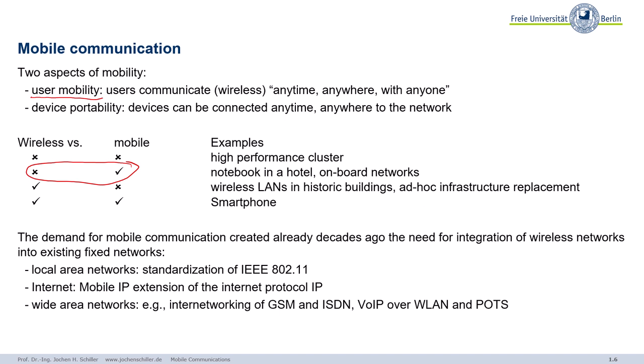We also have examples of non-mobile fixed wireless LANs — for example, in historic buildings where you cannot drill a hole through a historic wall, or ad hoc infrastructures set up after an earthquake. Then it's not mobile, but you have wireless connectivity. And what we all like is something like the smartphone where you have wireless connections and the device itself is mobile — you as a user are mobile, the device is portable, and usually you have the device with you.